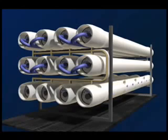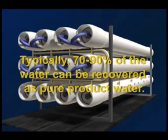The permeate water then flows out the end of the vessel and is collected as the product. And the reject or concentrate from that vessel may then flow through another vessel producing more permeate. The remaining concentrate may then be disposed of as waste or partially recycled as the feed. Typically 70-90% of the water can be recovered as pure product water.